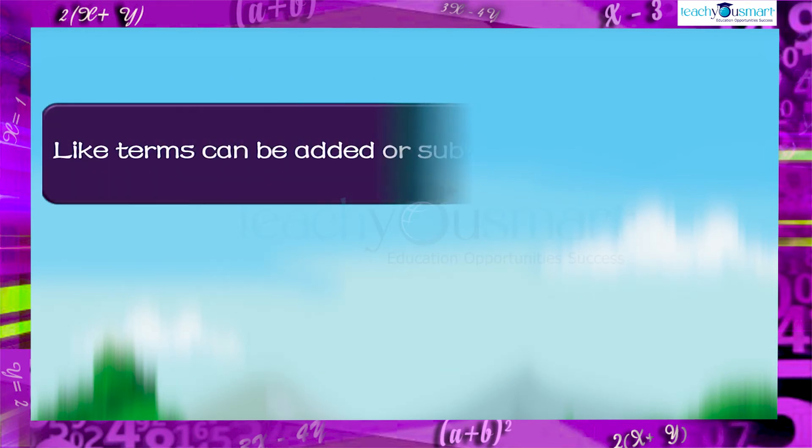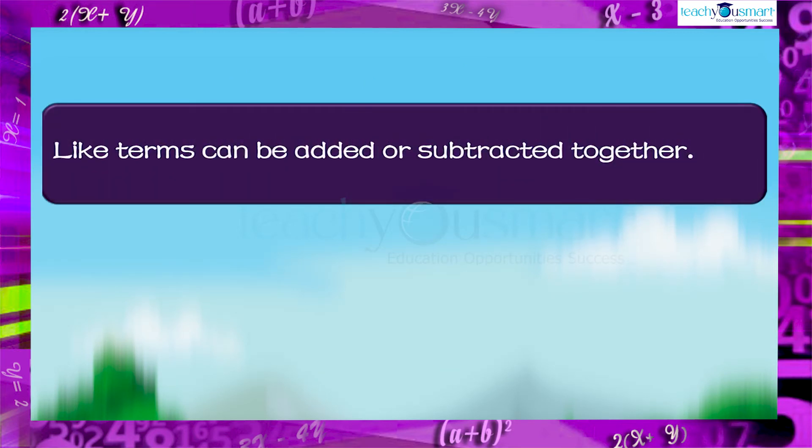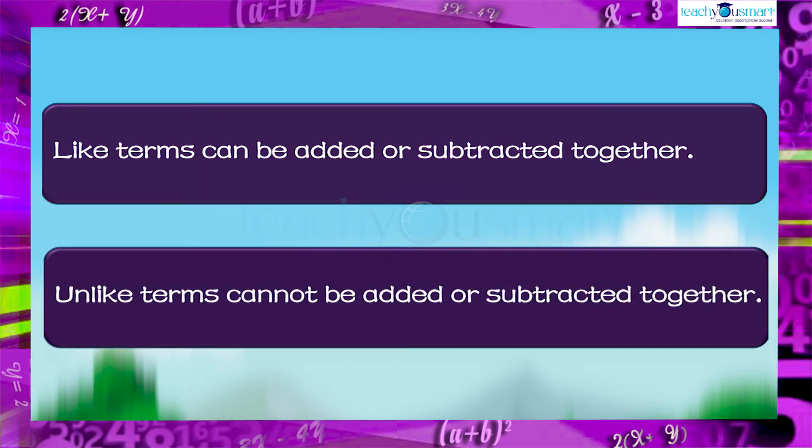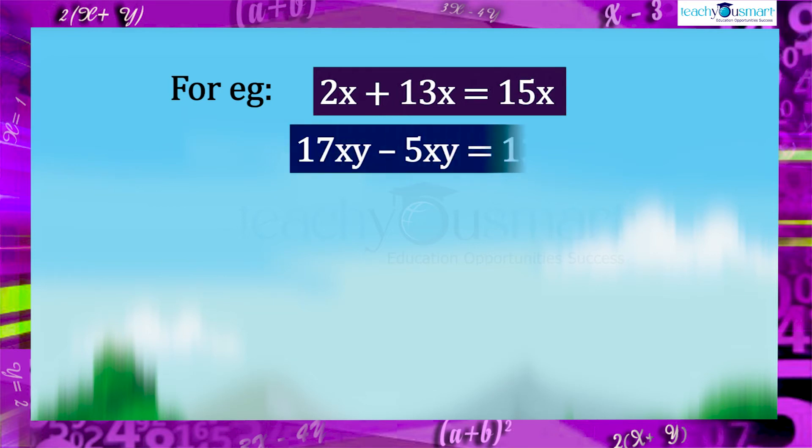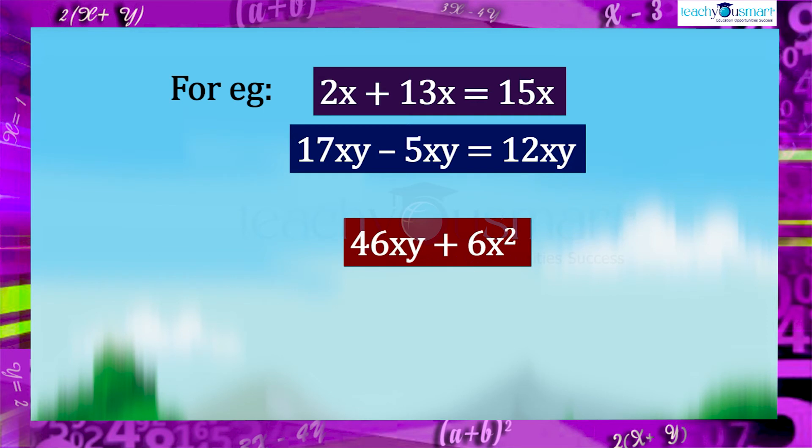The like terms can be added or subtracted together. But the unlike terms cannot be added or subtracted together. For example, 2x plus 13x equals 15x. 17xy minus 5xy equals 12xy. But the addition of 46xy and 6x square is not possible, because the variables are different in each term. That is 46xy and 6x square are unlike terms.